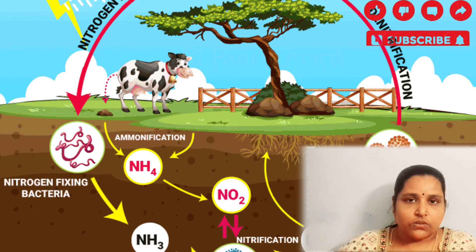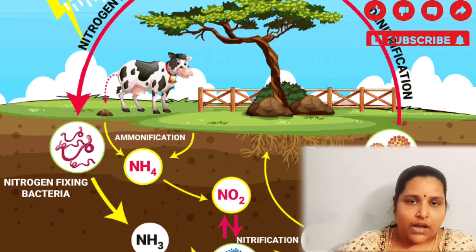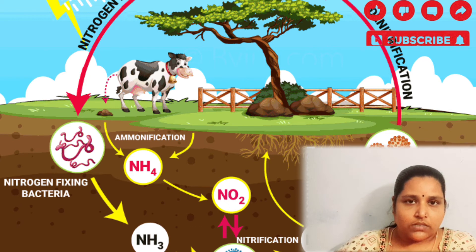During respiration, carbon dioxide is released by animals, and animals take oxygen which is released by plants into the air. This is the way the cycle continues. There is also an exchange of oxygen from sea to atmosphere.